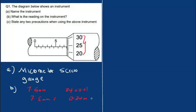Then we add these two, so just add 7.5 millimeters plus 0.24 millimeters, and we are getting 7.74. So this is the reading on the instrument.